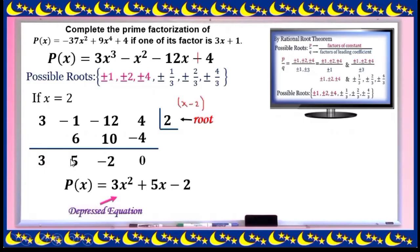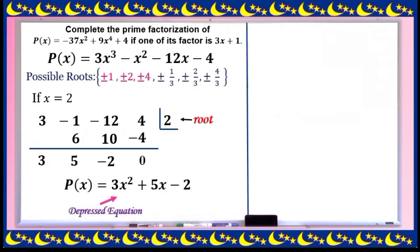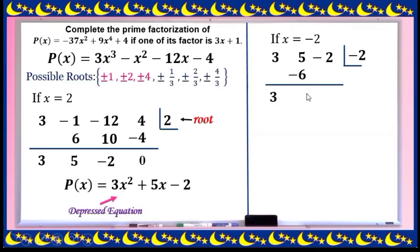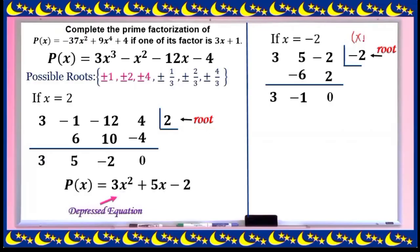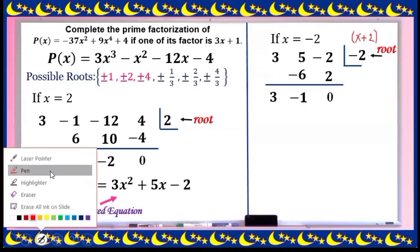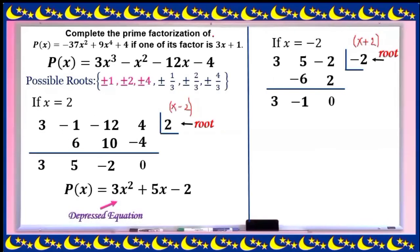The new depressed equation is 3x² + 5x - 2. We now have two factors found so far: (3x + 1) and (x - 2). Try x = -2 on coefficients 3, 5, -2: 3 × (-2) = -6, add 5 = -1, multiply by -2 = 2, add -2 = 0. Remainder is 0, so x = -2 is another root, giving factor (x + 2).